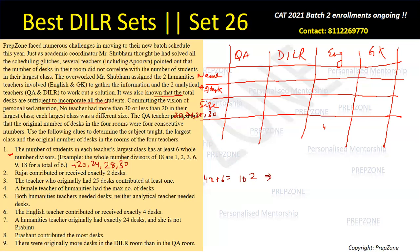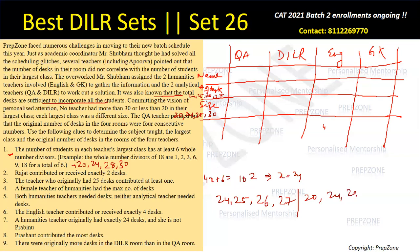Solving: 20 + 24 + 28 + 30 = 102, so 4x + 6 = 102, which gives 4x = 96, so x = 24. Therefore the four original desk values are 24, 25, 26, and 27.